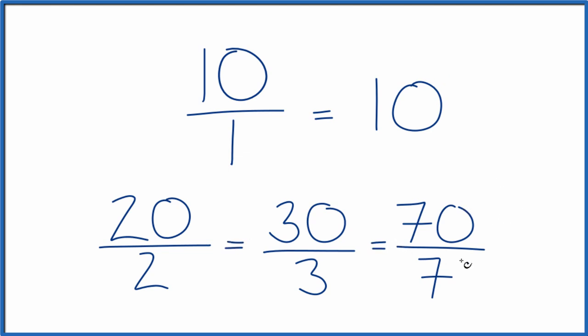If you divide 70 by 7, 30 by 3, 20 by 2, or 10 by 1, you get 10, the whole number. That's because these are all equivalent fractions.